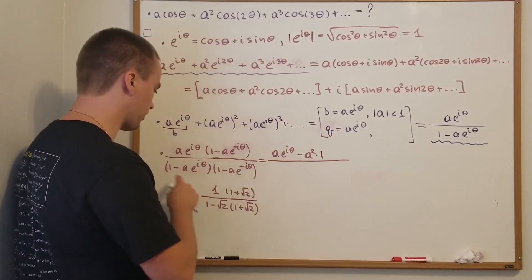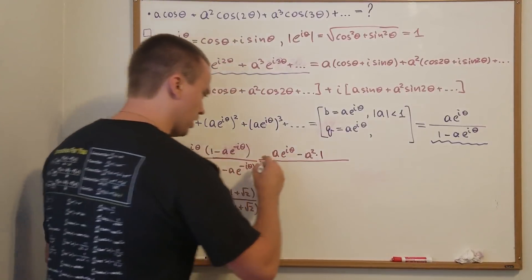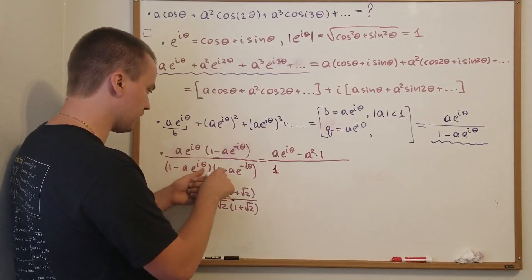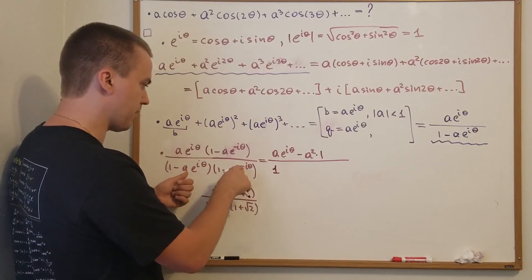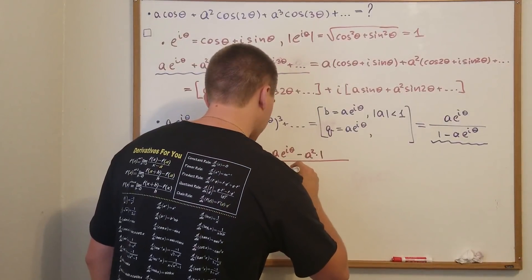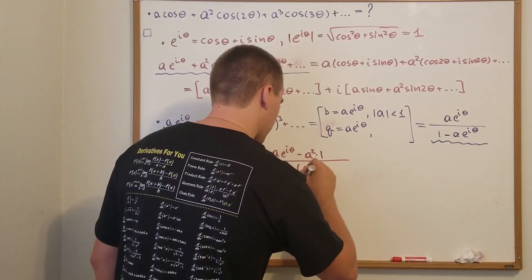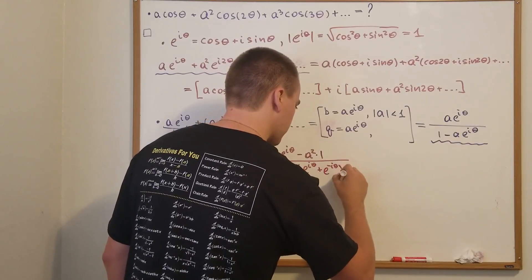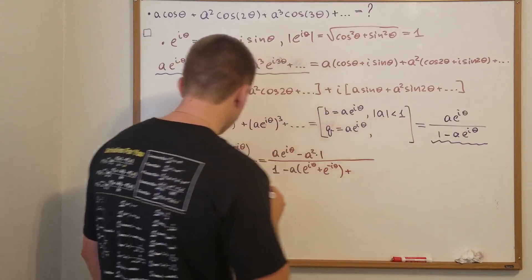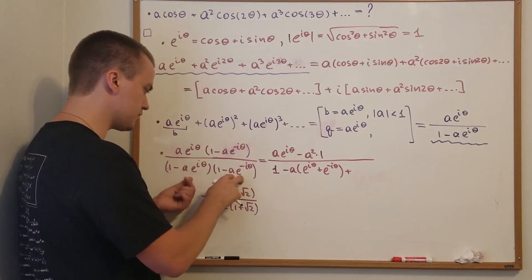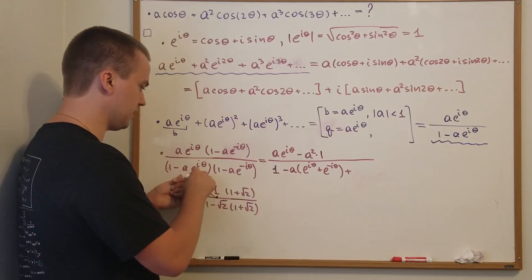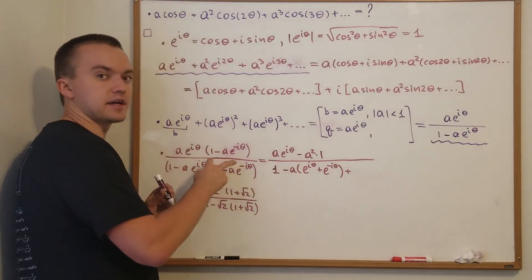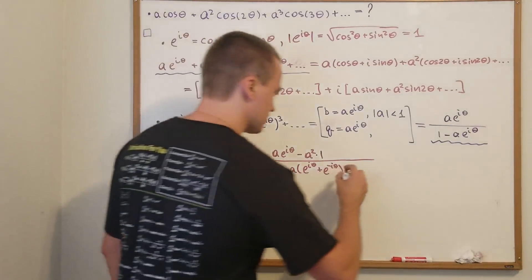For the bottom part, the first term is 1. Then we get minus A·e^(iθ) minus A·e^(−iθ), which we can factor as −A·(e^(iθ) + e^(−iθ)). The last part gives A²·e^(iθ − iθ), and since the exponents cancel to zero, it becomes just A².